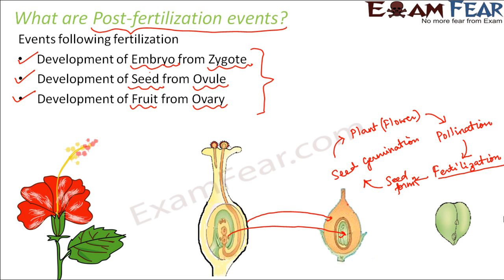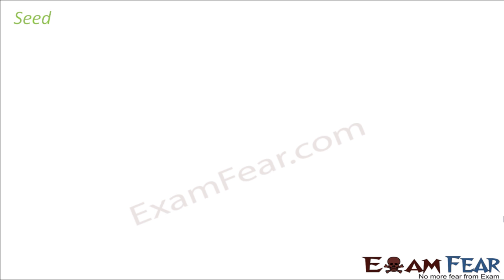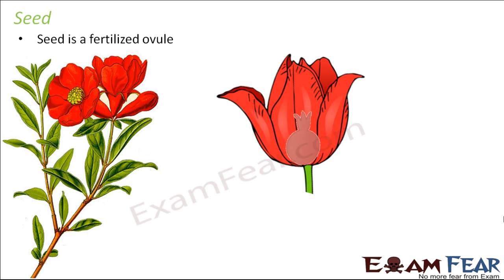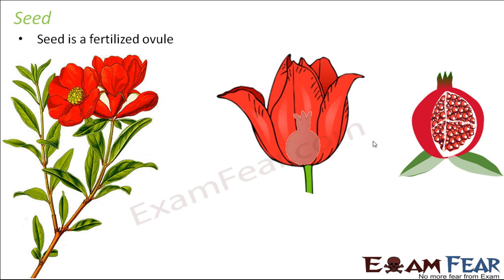Now let us talk about the seed, because from the seed only we get new plants. A seed is nothing but a fertilized ovule — the ovule becomes a seed after fertilization. Inside any flower you will have the female reproductive part, the ovary, which contains the ovule. The ovary becomes the fruit and the ovule becomes the seed.